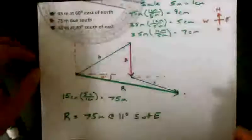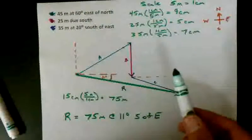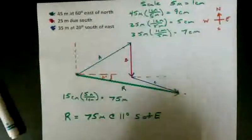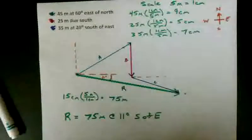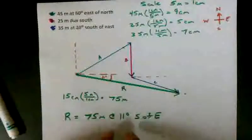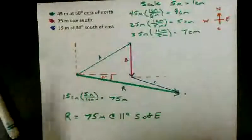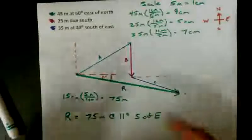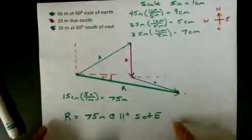Now remember, the graphical approach is an estimate because it relied on us drawing with a pen, or in this case a marker, and using a protractor. All our measurements are going to have some little bit of error in them, so our resultant won't be exactly correct. 75 meters at 11 degrees south of east is close enough for most cases. But if we want to get an exact answer, we'll have to use the algebraic approach, which we'll use in the next lesson with the same problem, and we'll be able to see how close we actually came.